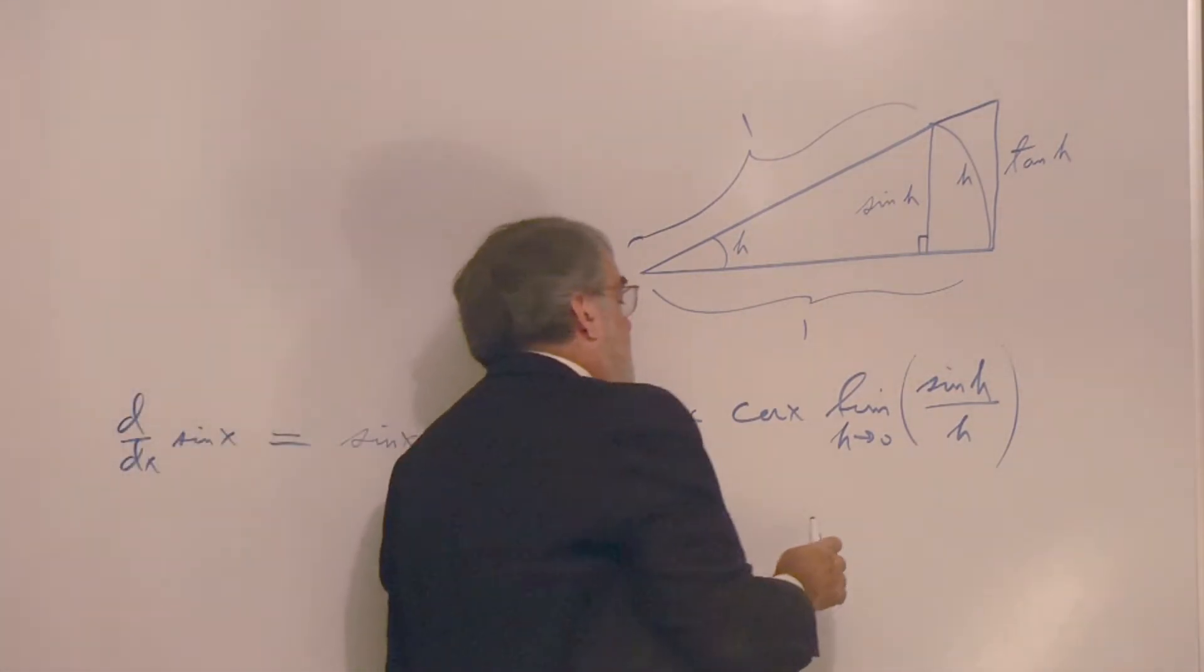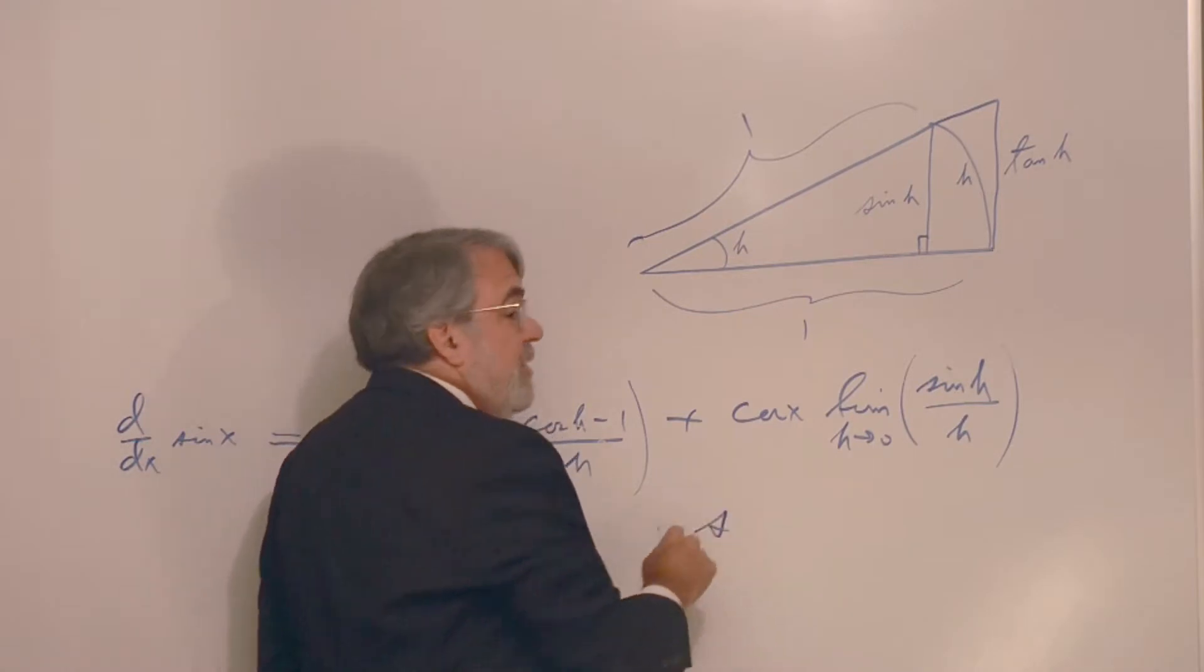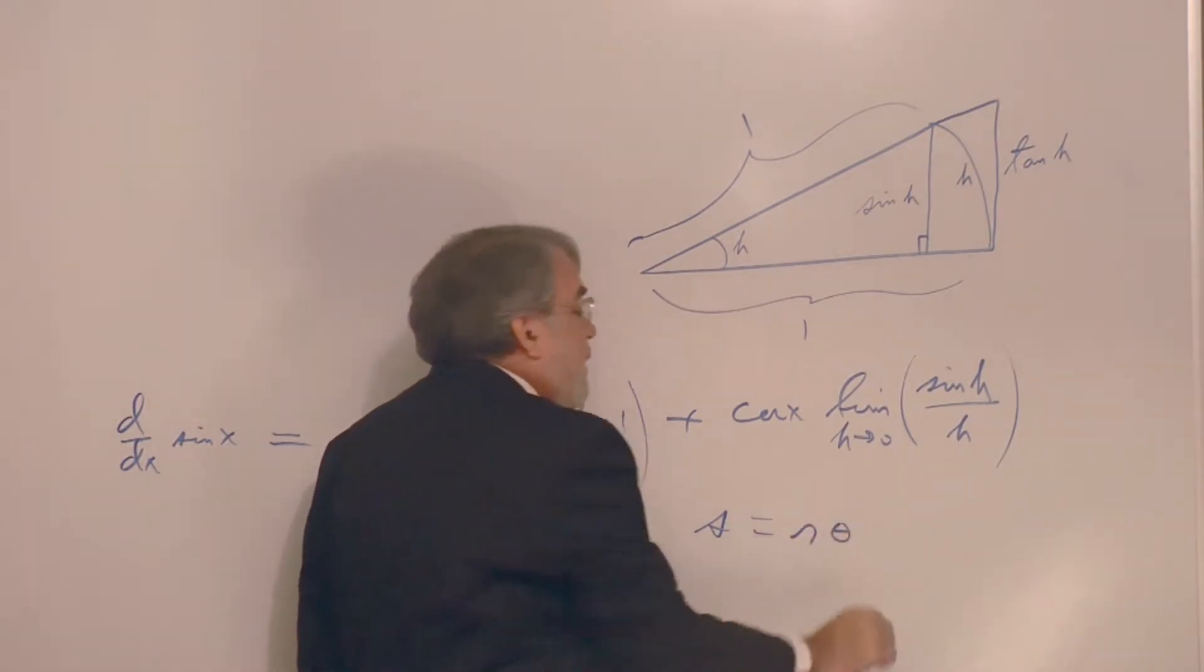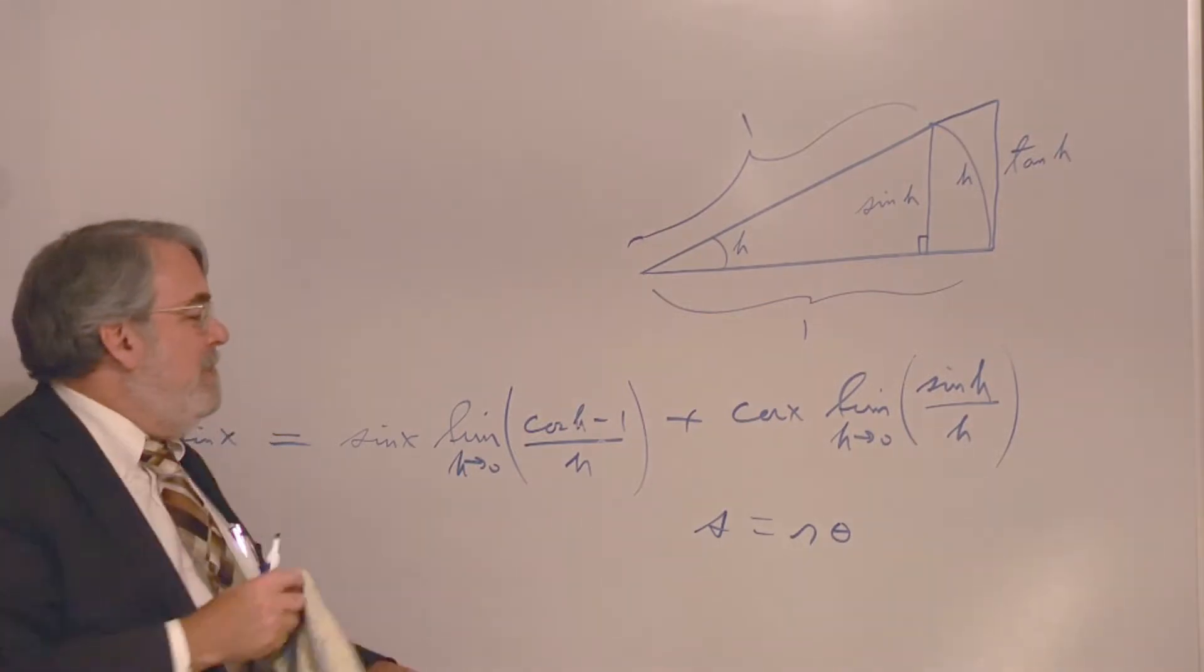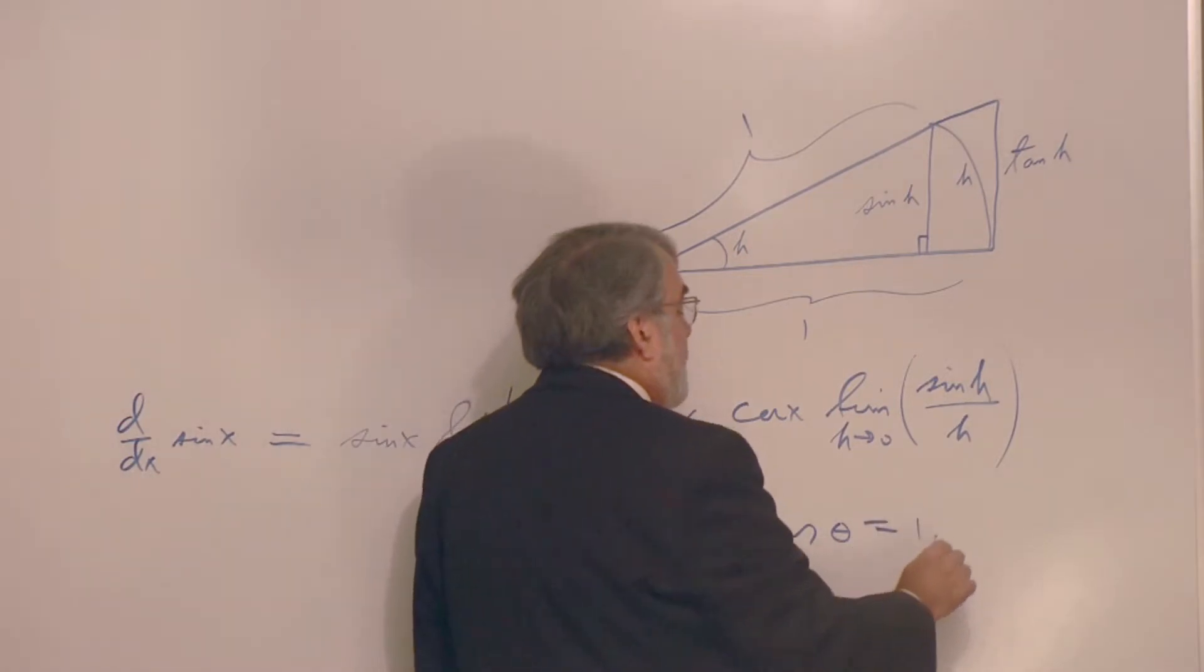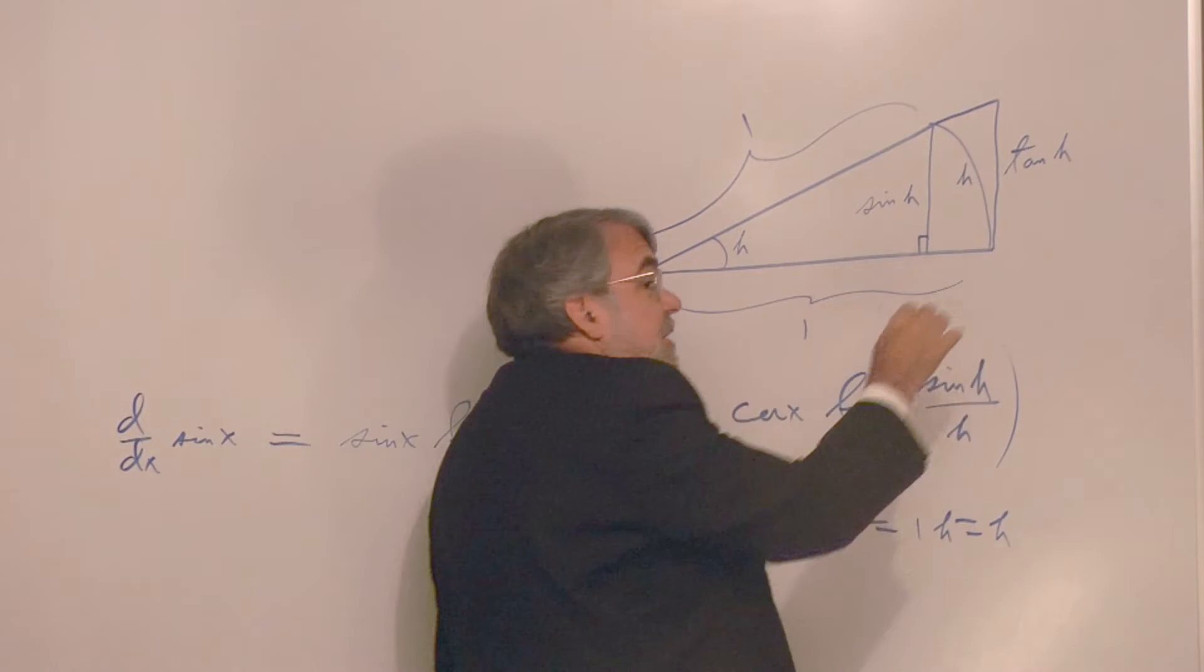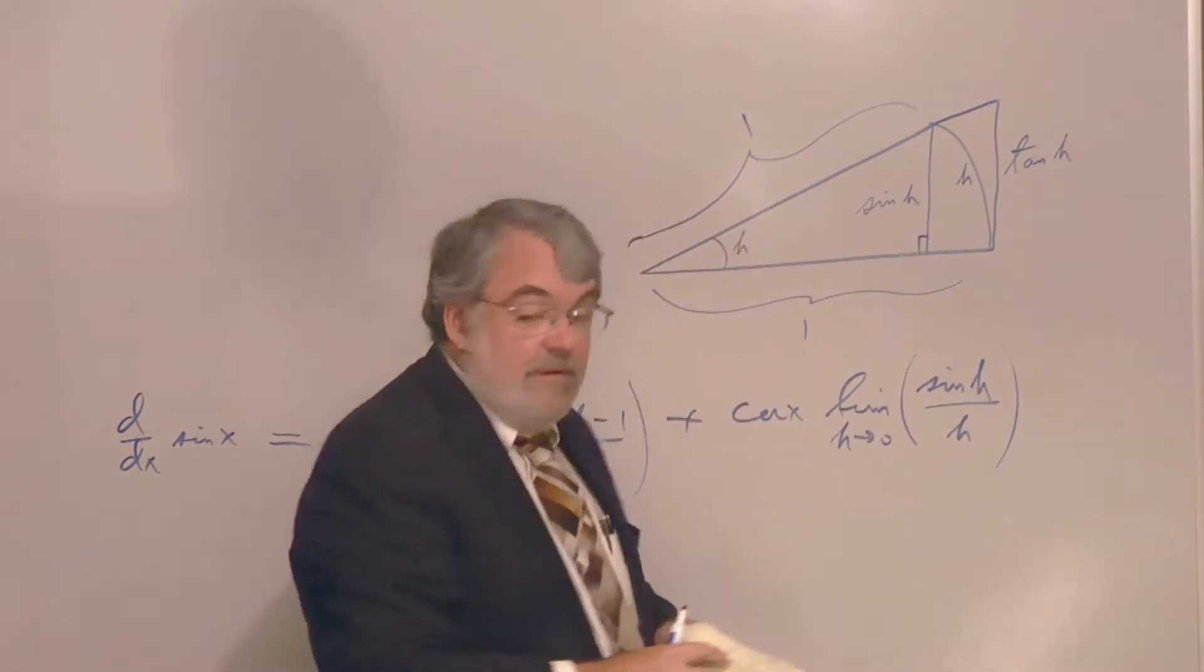Now, the arc length, arc length in trigonometry, we might call it S. S for some reason means arc length. It is radius times angle. S equals r theta. You might remember that from taking trigonometry. But in here, my radius is one and my angle is h. So this arc length is simply h, like that.